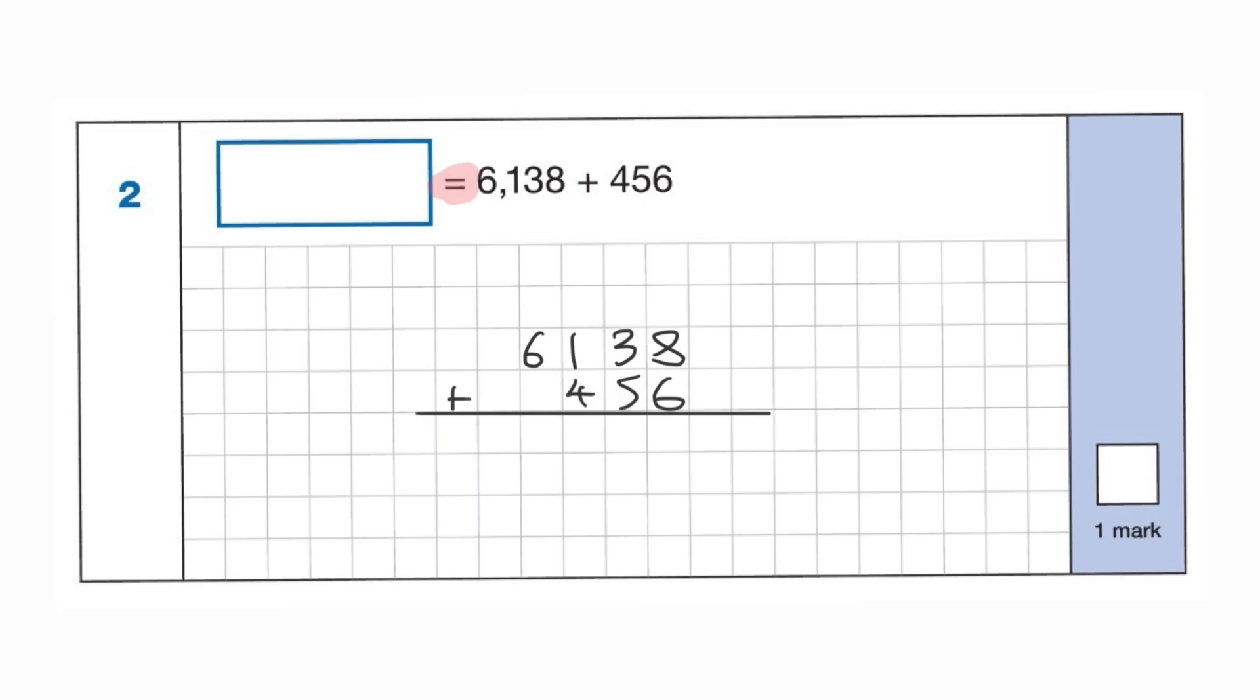So 8 add 6 is 14. We're going to carry the 1. 3 add 5 is 8. Add the 1 is 9. 1 add 4 is 5. And the 6 is going to drop down. 6,594. Correct. And draw your attention, this is the second question on the paper. I could see this question throwing lots of pupils early doors who are not quite sure how to do it or how to lay it out. It's just an addition or a subtraction.